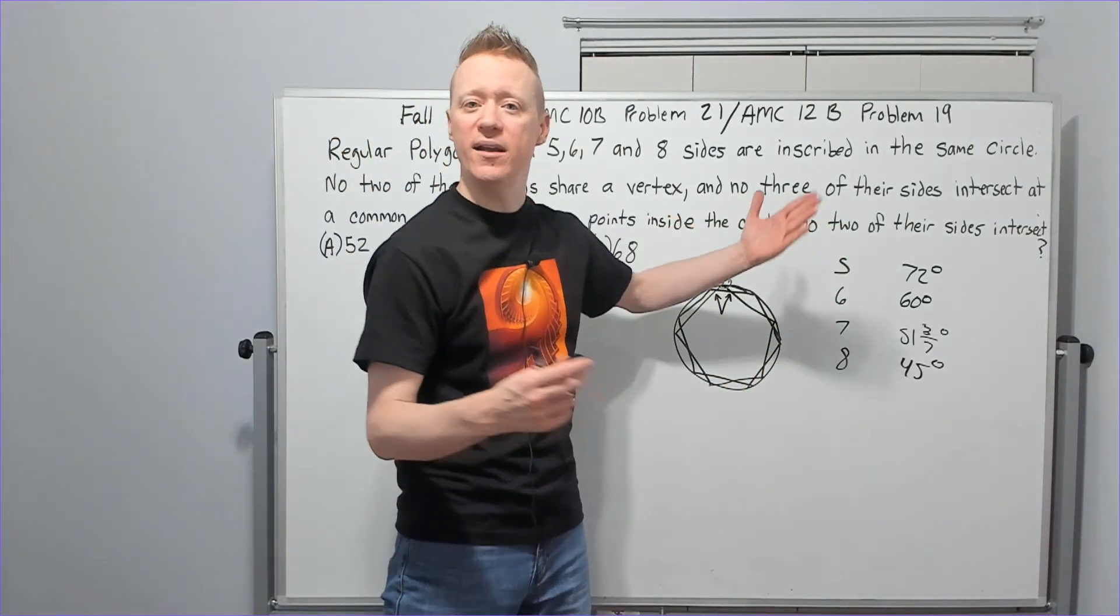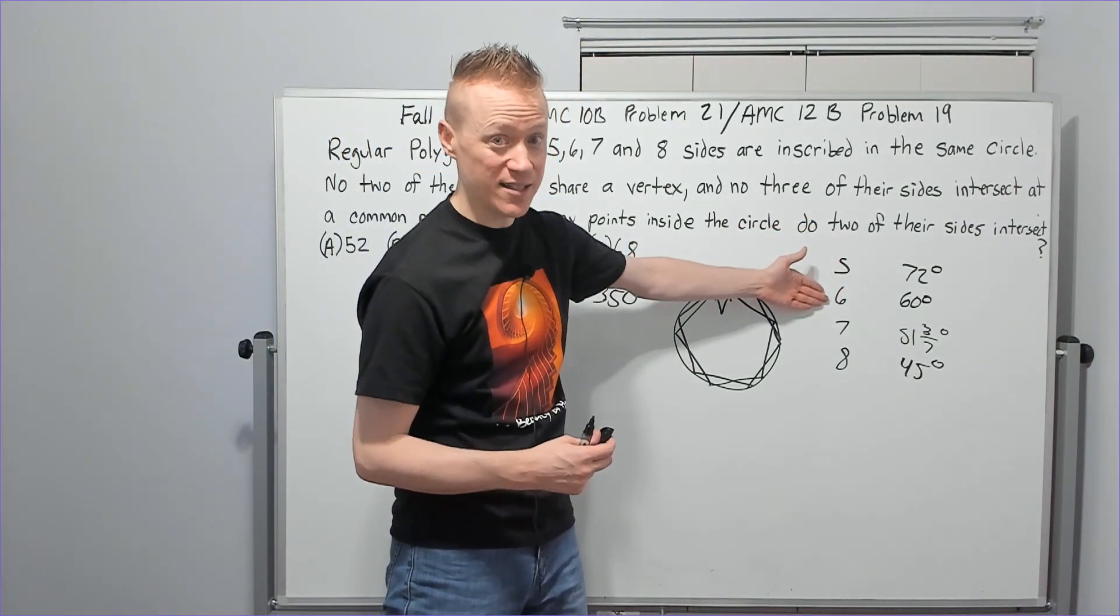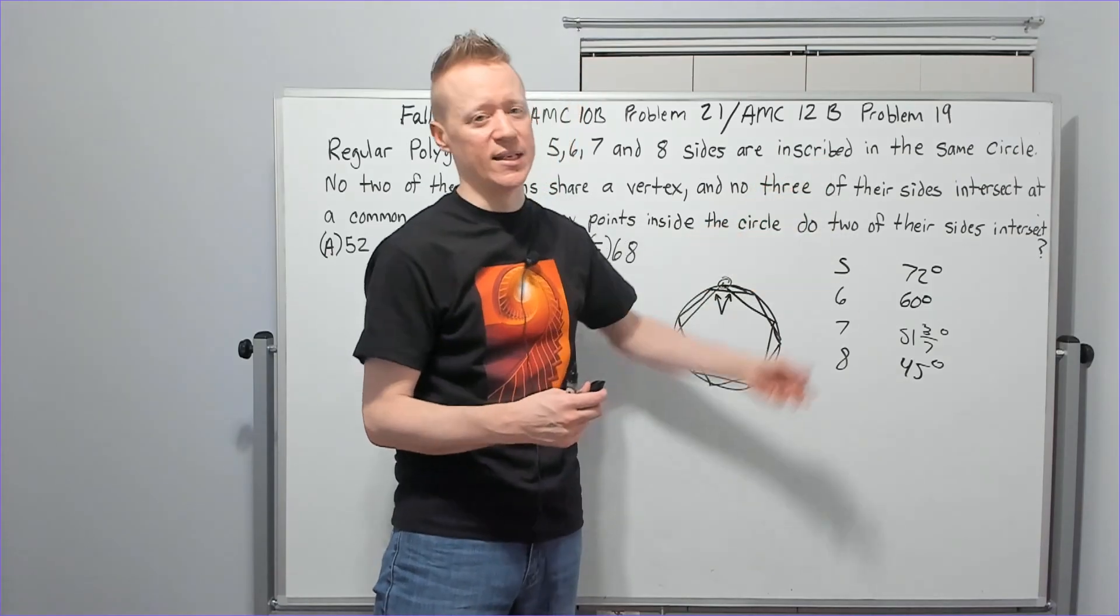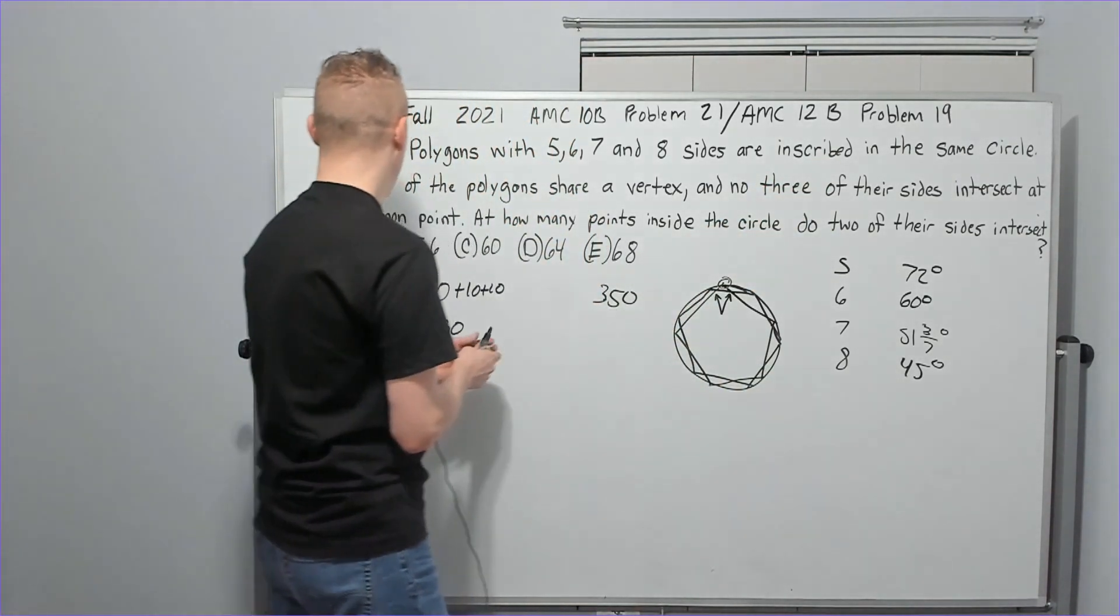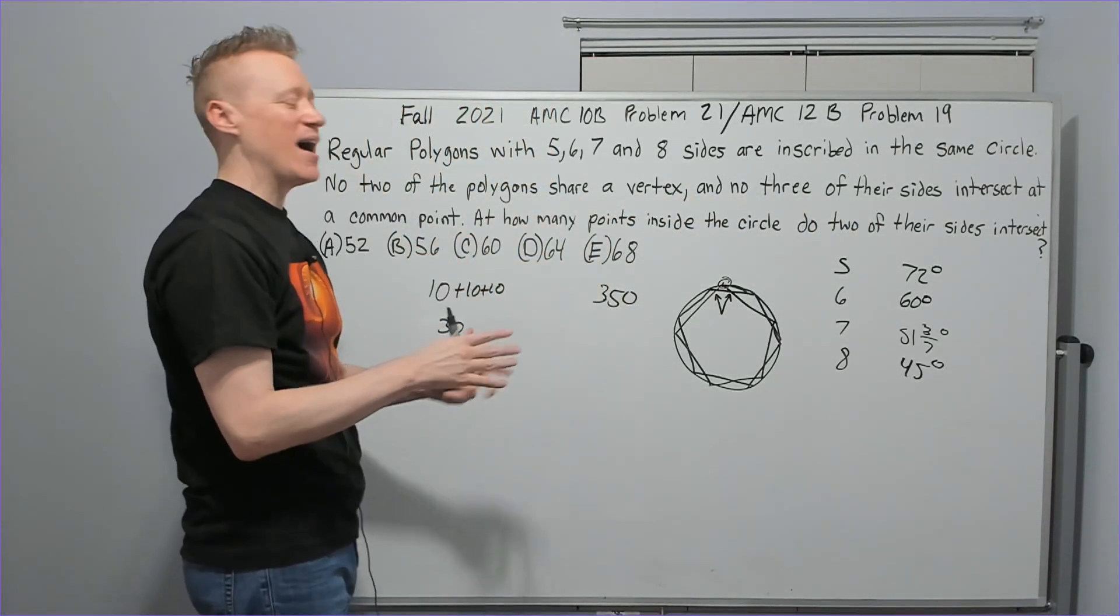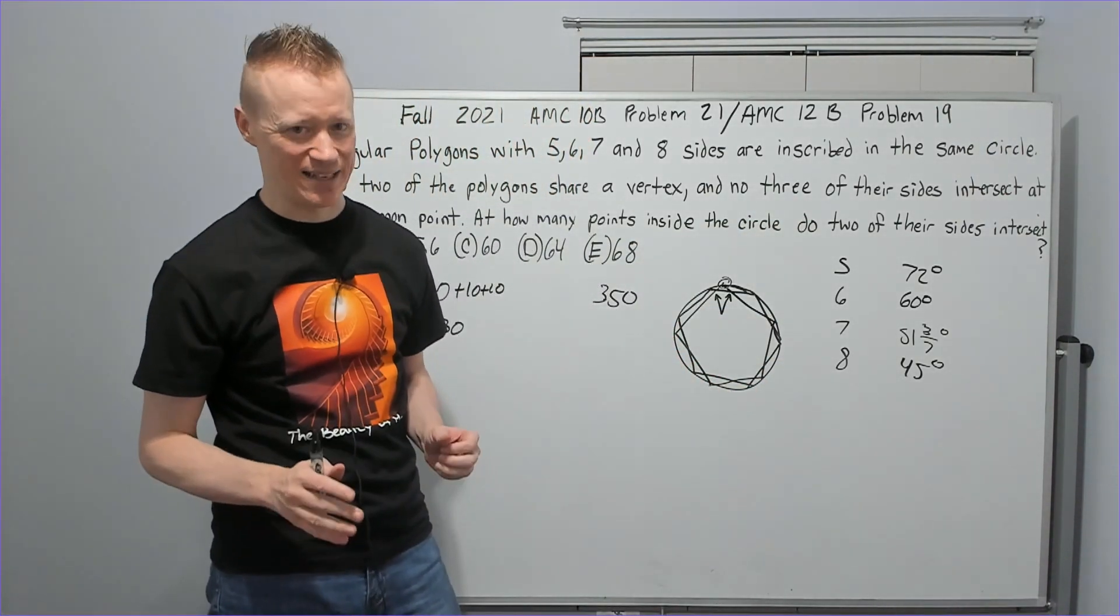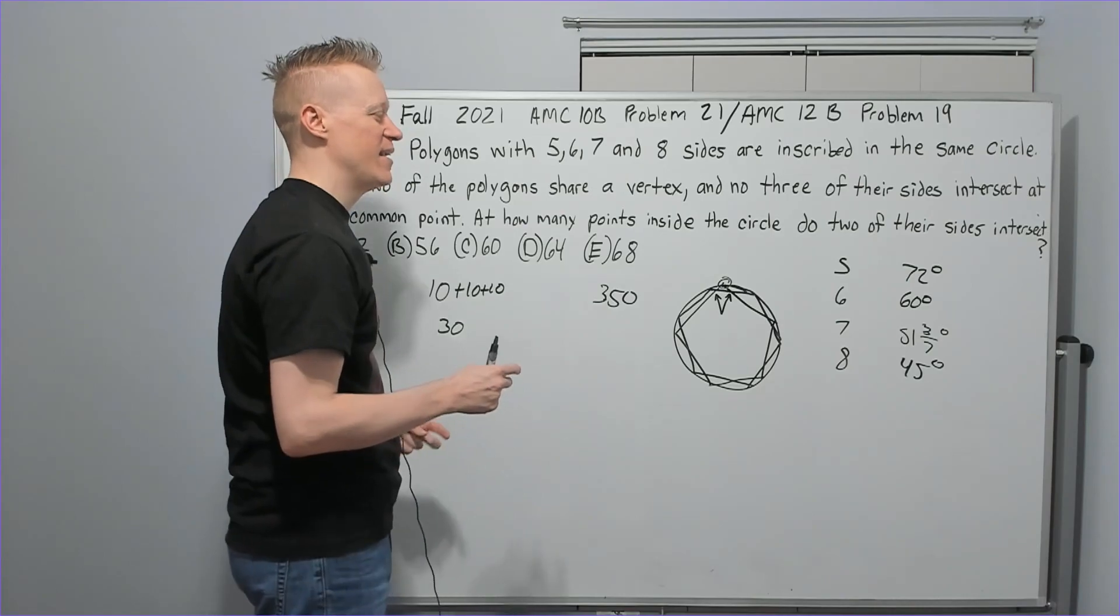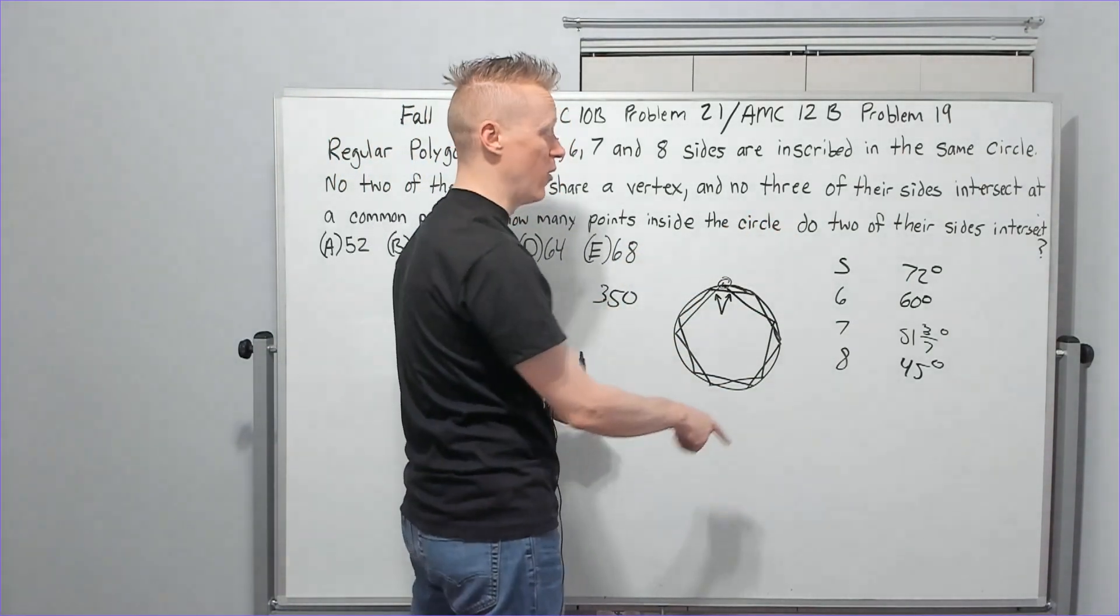I don't need to worry about going the other way. Those are already accounted for. Like, for example, if the pentagon's intercepting the hexagon, then the hexagon's also—it's only one point, right? And we don't have to worry about 'no three of their sides intersect at a common point.' I don't have to worry about that. All of these points of intersection are unique.